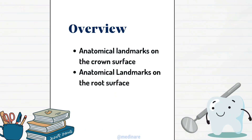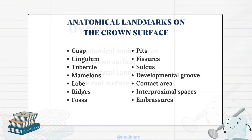Here we will study the anatomical landmarks of the crown surface as well as the root surface. The crown surface is not just a single mass like a ball. There are certain elevations and depressions on the crown surface which are named as cusps, cingulum, tubercle, mamelons, lobe, ridges, fossa, pits, fissures, sulcus, developmental groove, contact area, interproximal spaces, and embrasures.